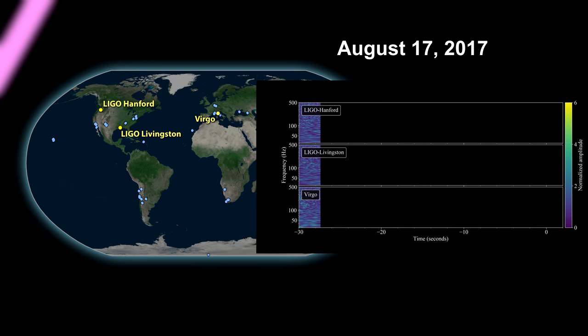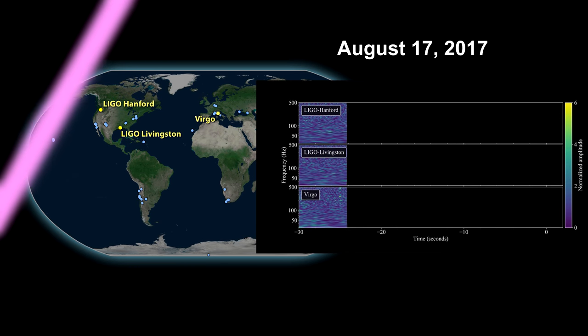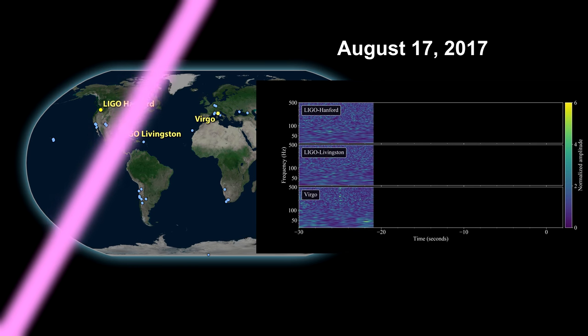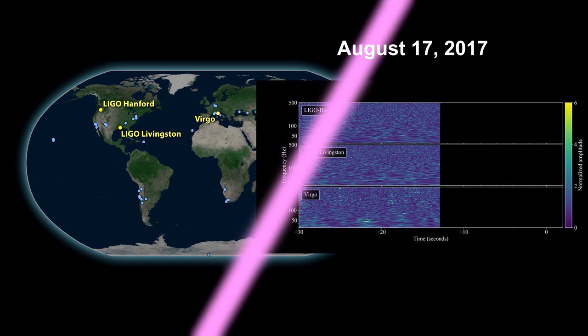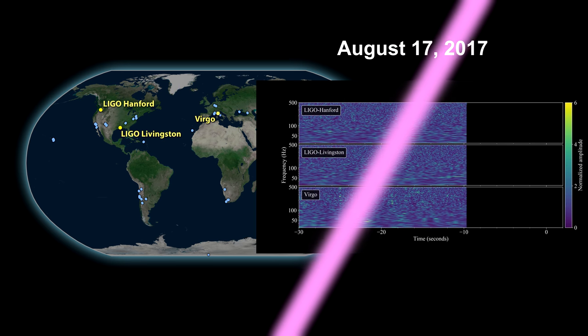On August 17, 2017, a gravitational wave traveling at the speed of light swept across the two LIGO interferometers and the new Virgo interferometer in Italy.